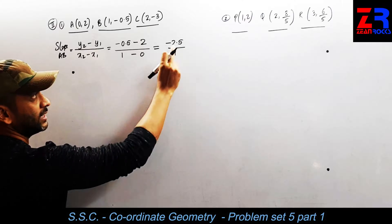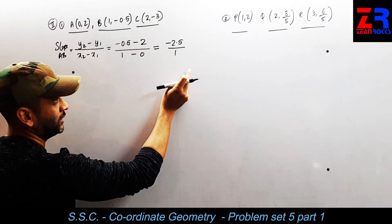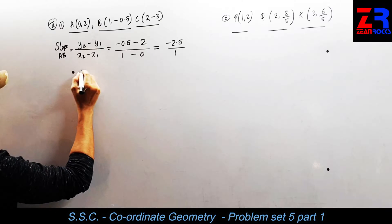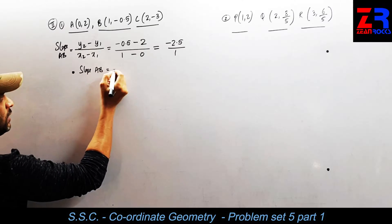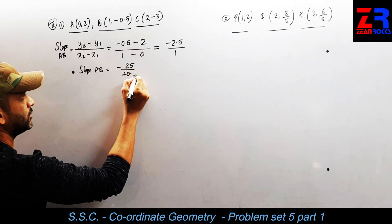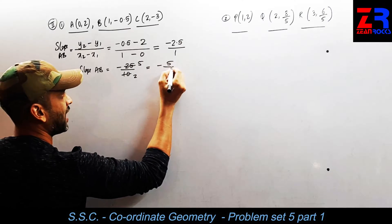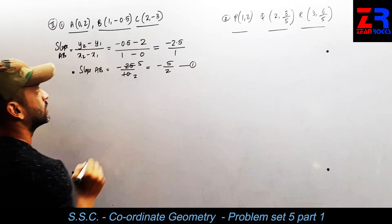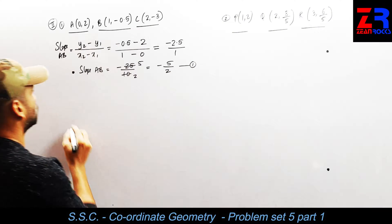There is a decimal point here, so I will shift the decimal point. Slope of AB equals minus 25 upon 10, which simplifies to minus 5 upon 2. So I have got slope AB as minus 5 upon 2.